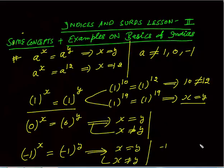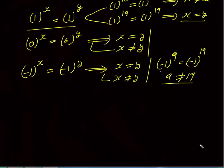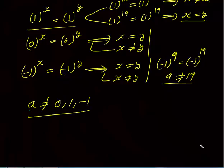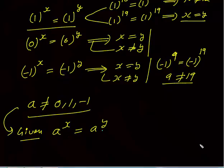For example, (-1)^9 = (-1)^19 because both equal minus one, yet 9 ≠ 19. So whenever the base is zero, one, or minus one, the exponents may or may not be equal. But apart from these cases, whenever a is not equal to zero, one, or minus one, if a^x = a^y, you can always conclude that x = y.